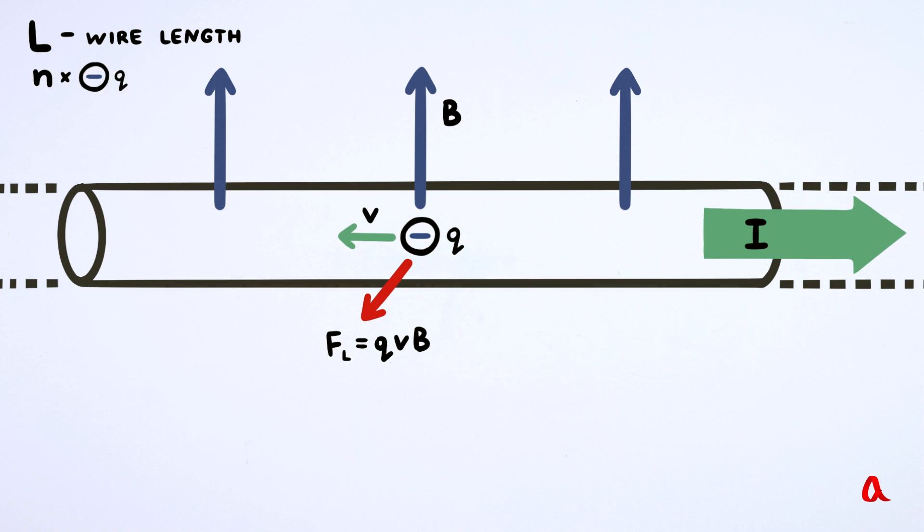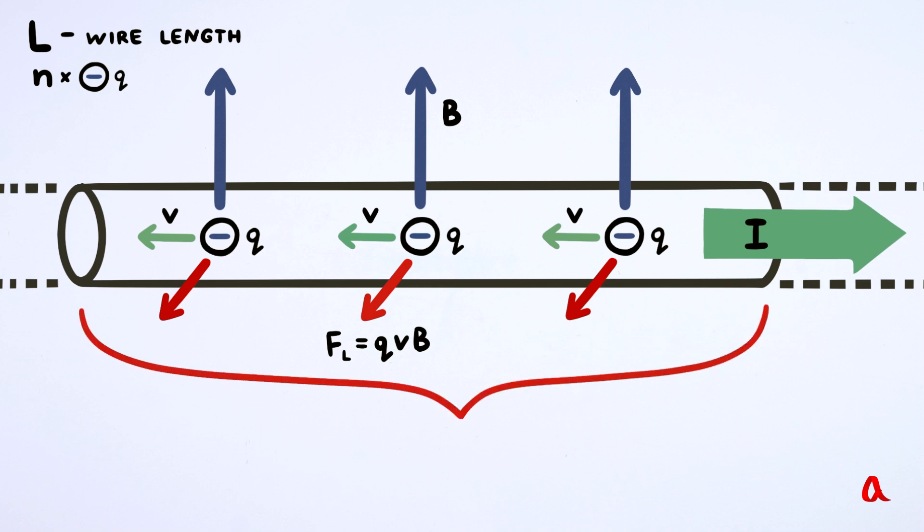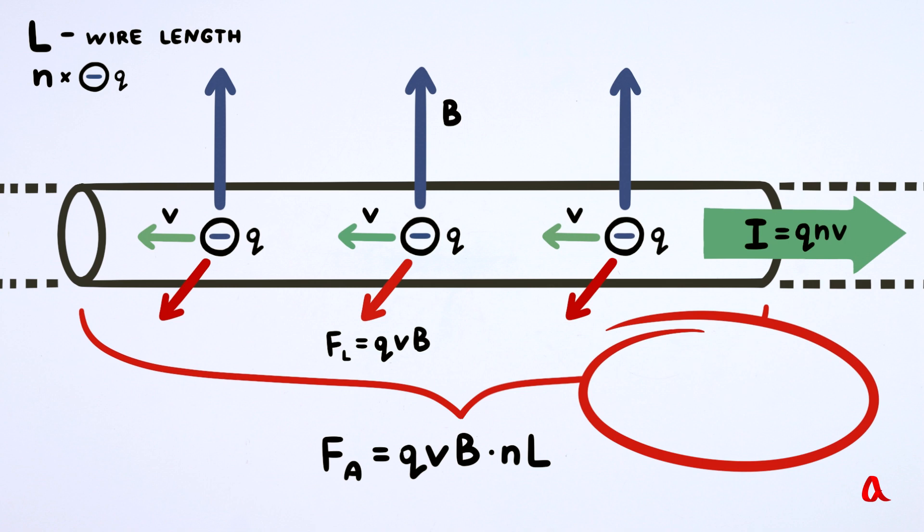Let N be the number of movable charge carriers per unit length of the wire. Then the total force acting on all these charges is equal to the Lorentz force multiplied by NL. But the current I flowing through the wire is equal to the product of Q and V. From this we get that the Ampère force is proportional to the current, the magnetic field, and the length of the wire segment located in the field region.